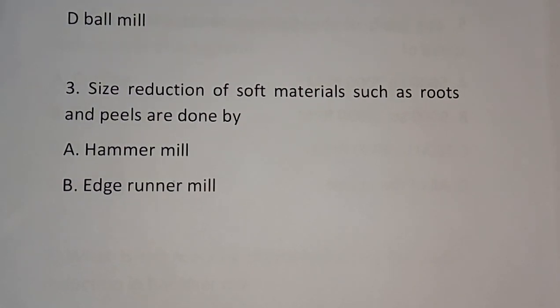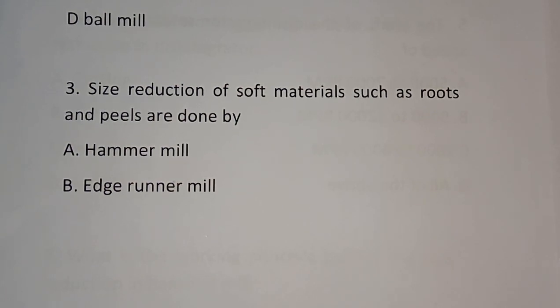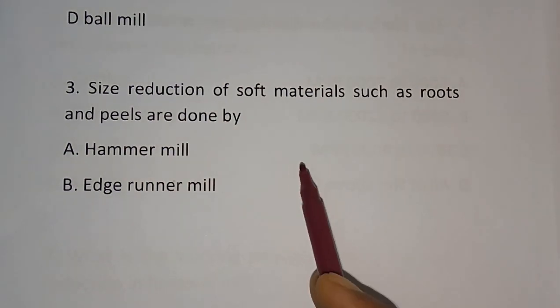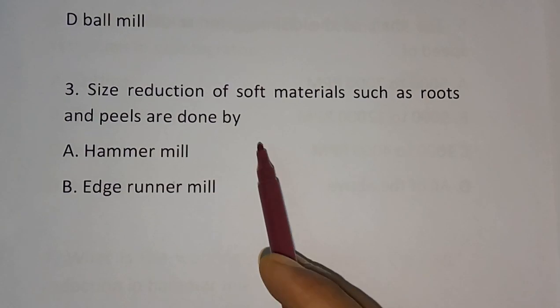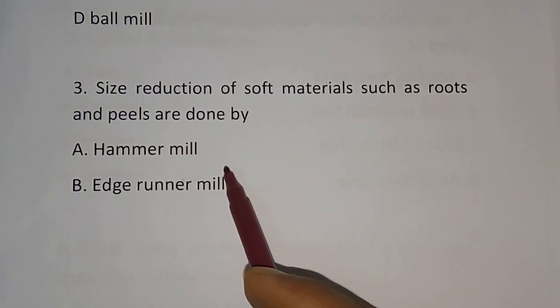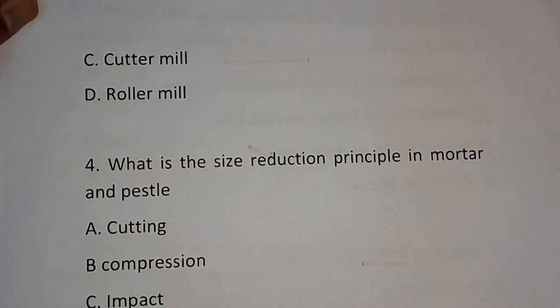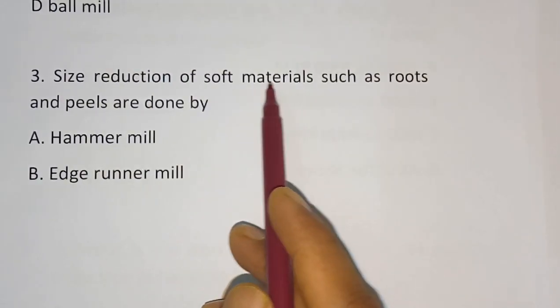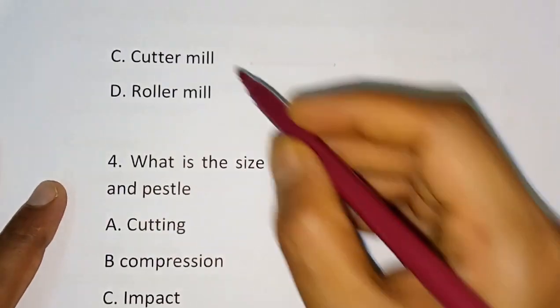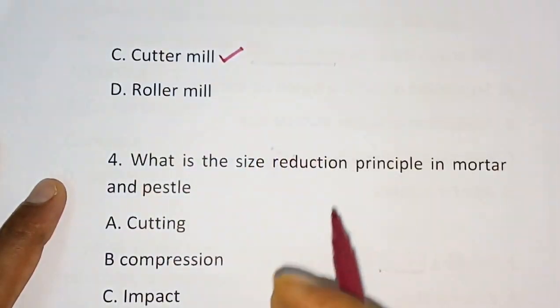Question number 3: Size reduction of a soft material such as roots and peels is done by which equipment? Options are: hammer mill, edger runner mill, cutter mill, roller mill. For soft material, size reduction is done by cutter mill — Option C is the correct answer.